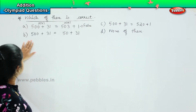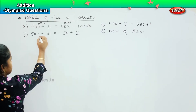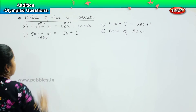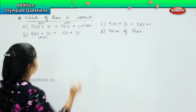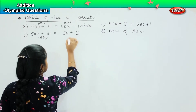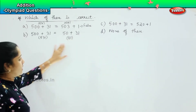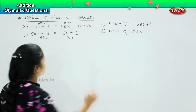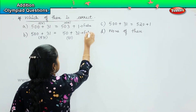So which means that option A is a false statement. Coming to the next one: 500 plus 31 is how much? 531. And 50 plus 31 is how much, children? 0 plus 1 is 1 and 5 plus 3 is 8, so it is 81. So is 531 and 81 the same? No. So again, this is also a false statement.